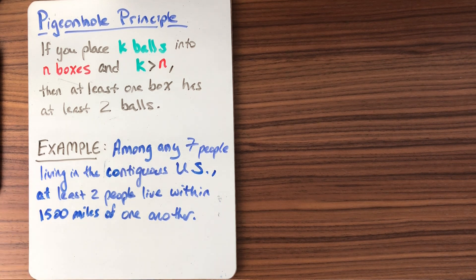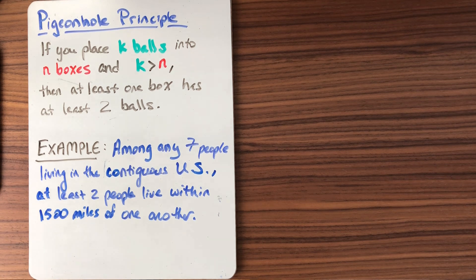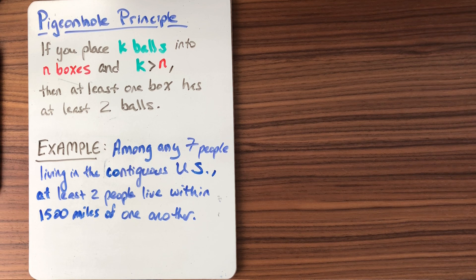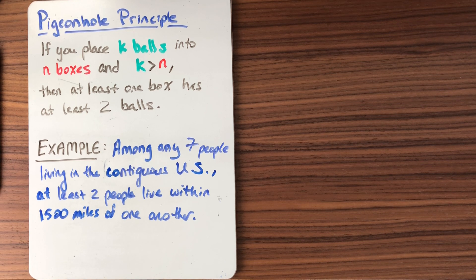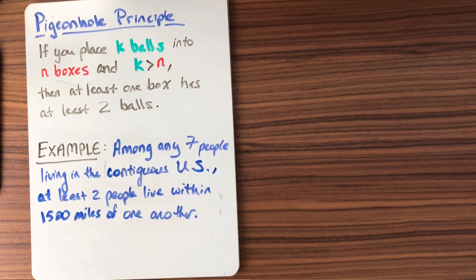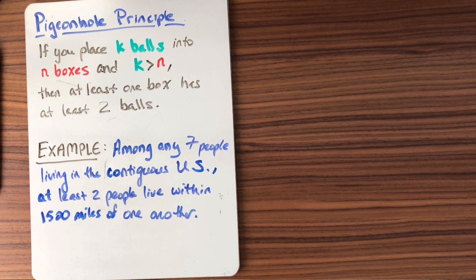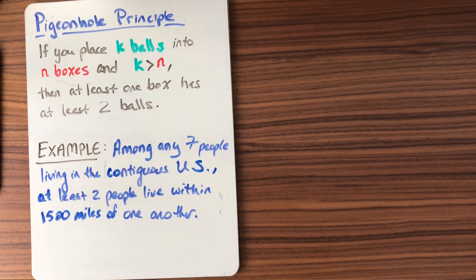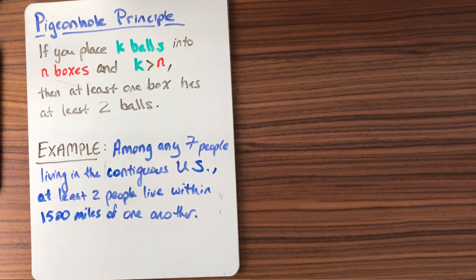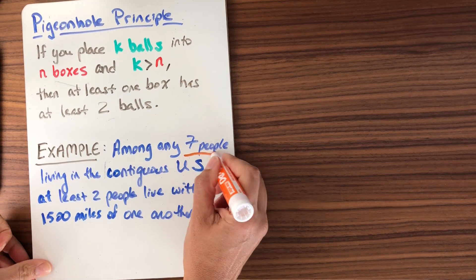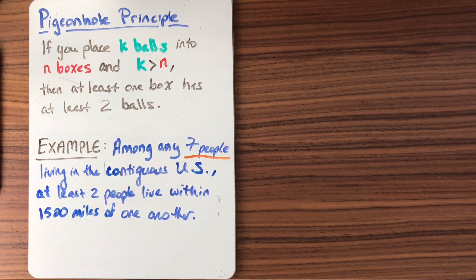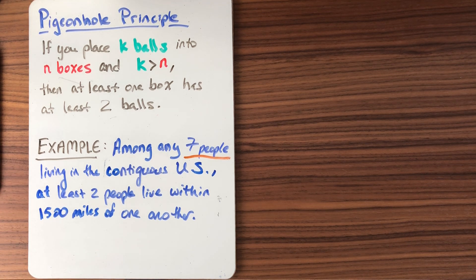So let's unpack this statement. If I pick any seven people, I could pick any seven of you in this class, assuming you are living in the contiguous United States, and then two of you are going to live close together within 1500 miles of each other. That's kind of startling and surprising. So let's think, what are the components that I have here? What are the balls? What are the boxes? What are the important parts of the problem? Well, there's definitely seven people. That's important. People, that's either going to be a ball or a box.